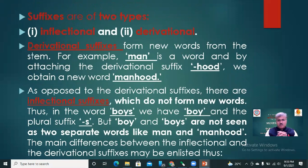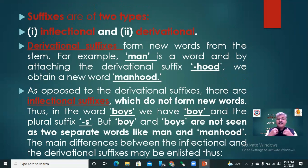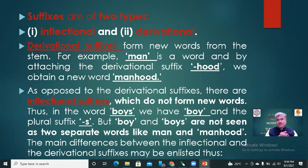Now we will move towards the types of suffixes. There are two types of suffixes: inflectional suffixes and derivational suffixes. Derivational suffixes form new words from the stem — for example, by attaching the derivational suffix '-hood' to 'man', we obtain the new word 'manhood'. As opposed to derivational suffixes, inflectional suffixes do not form a new word. In the word 'boys', we have 'boy' and the plural suffix '-s', but 'boy' and 'boys' are not seen as two separate words like 'man' and 'manhood'.